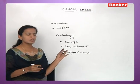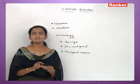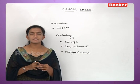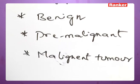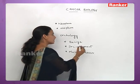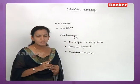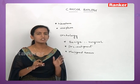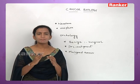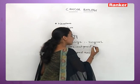Benign tumors can be removed by surgical methods. For example, fibroids present in the uterus can be removed surgically. A benign tumor does not spread to the rest of the body — it is restricted to one place and can be removed by surgical method.